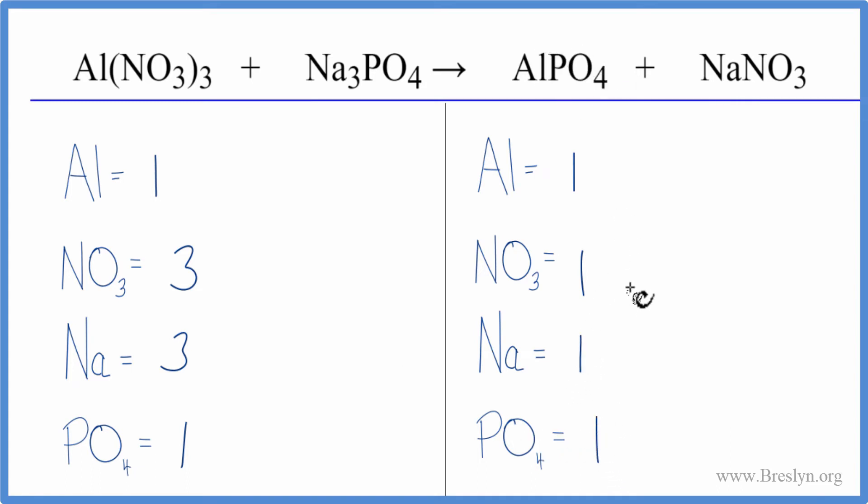So we've got it all set up here, and we can see pretty clearly right now that if we put a coefficient of three in front of the sodium nitrate, we have one times three for the sodium. That gives us three of those. And then for the nitrate, we have the one times the three. That gives us three of those, and we're done.